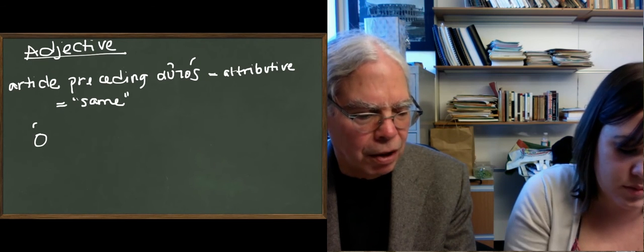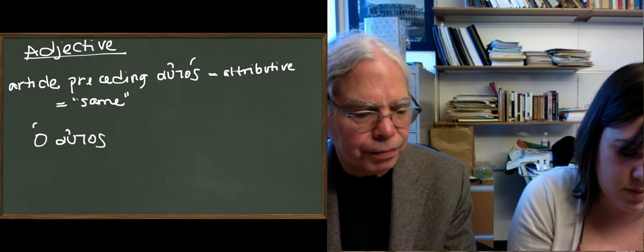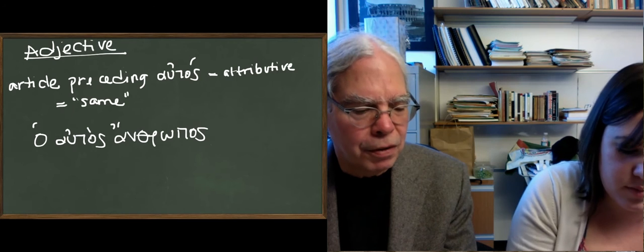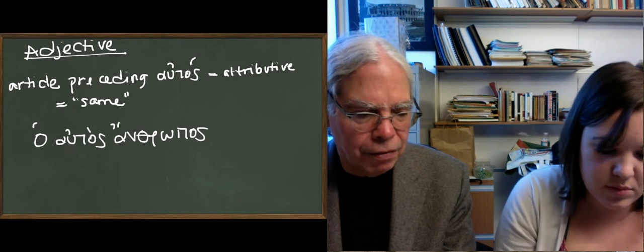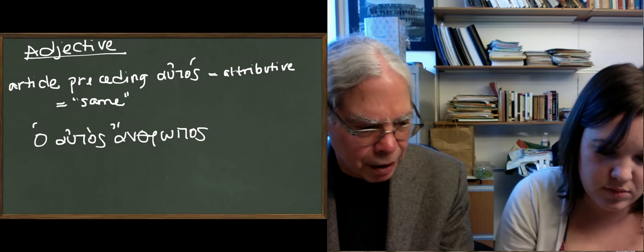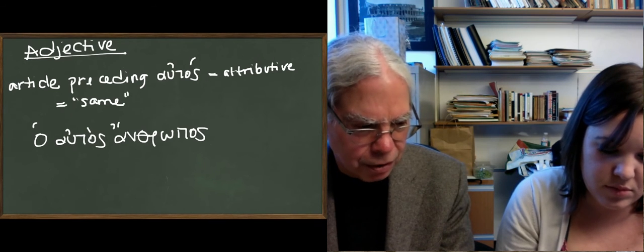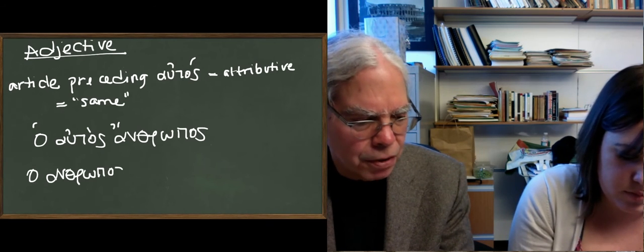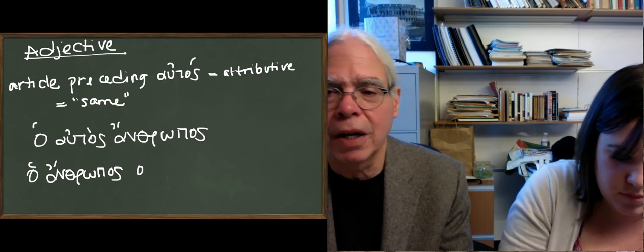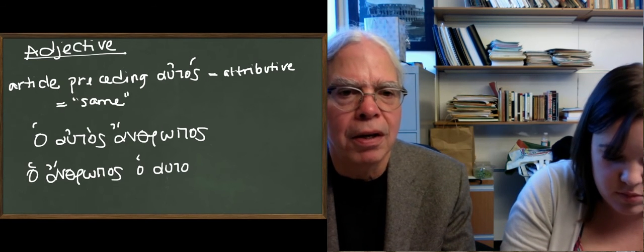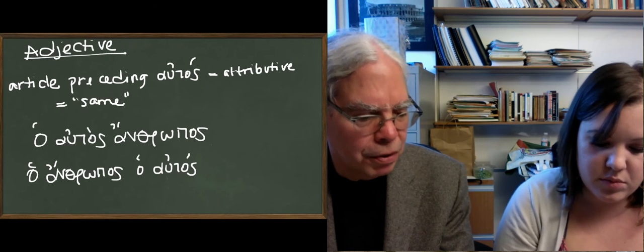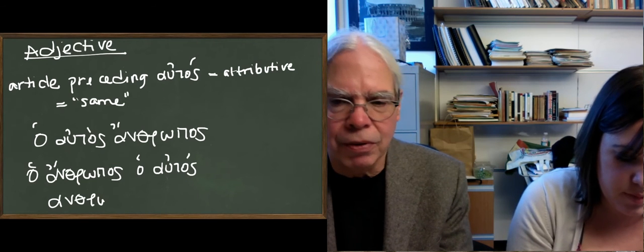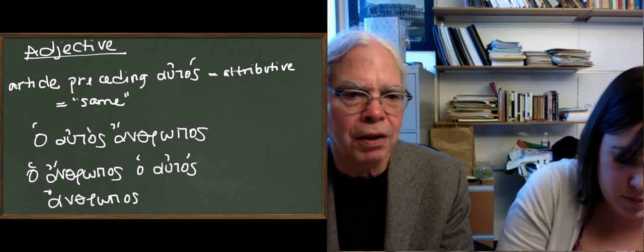Here's the standard example. Ha, autos, anthropos. That's going to mean the same human being. You can have an attributive position work by repeating the article. You can also say anthropos, ha, autos. Or autos, ha, anthropos. The article doesn't have to come before the noun.